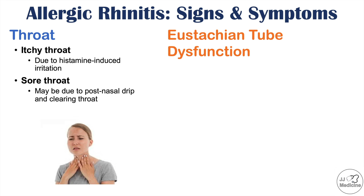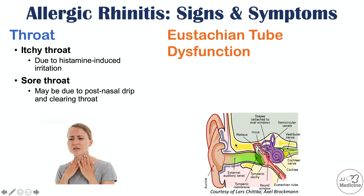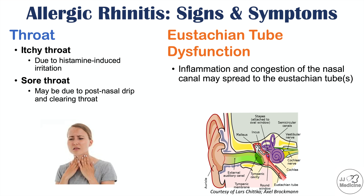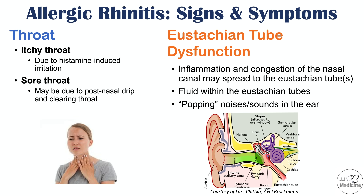There can also be eustachian tube dysfunction. The eustachian tube connects to the nasal cavity, so inflammation and congestion of the nasal cavity may spread to the eustachian tubes. With eustachian tube dysfunction, there can be fluid within the eustachian tubes, and patients often describe popping sounds in their ears — sometimes described as a rice crispy-type crackling or popping sound.